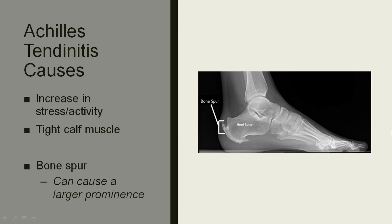You can get a bone spur in the back of the heel, which is associated with Achilles tendonitis. Again, the bone spur is not the cause of the problem — it's a result of the inflammation. You get calcifications in areas of chronic inflammation. The bone spur can cause some symptoms because it's prominent on the back of the heel, so when shoes rub against it, it can be bothersome. But usually the Achilles tendonitis itself is the more bothersome pathology.